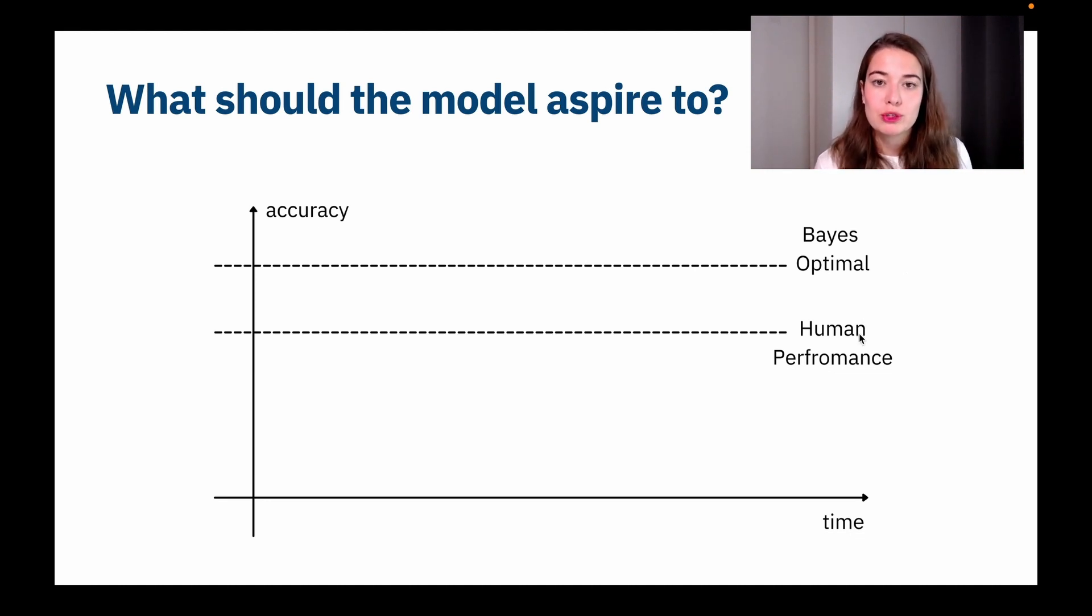But for most tasks it's actually a bit higher than zero, and by definition it's always higher than the human performance. Because at least the human performance needs to be worse than, or equal to, or worse than Bayes optimal performance, because there is nothing better than Bayes optimal performance.